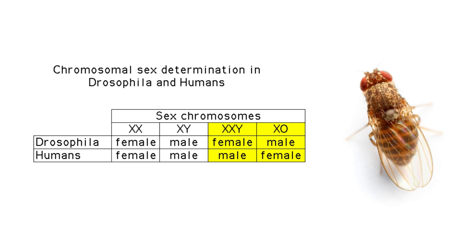Normally, flies have either one or two X chromosomes and two sets of autosomes. If there is but one X chromosome in a diploid cell, the fly is male. If there are two X chromosomes in a diploid cell, the fly is female. Thus, XO Drosophila are sterile males.